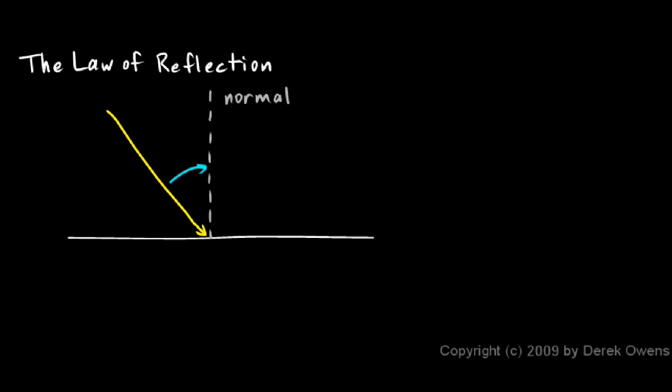The angle here that the ray of light makes with the normal, that is what we call the angle of incidence. So the incoming ray is the incident ray, and the angle that it makes with the surface normal is called the incident angle, or the angle of incidence.